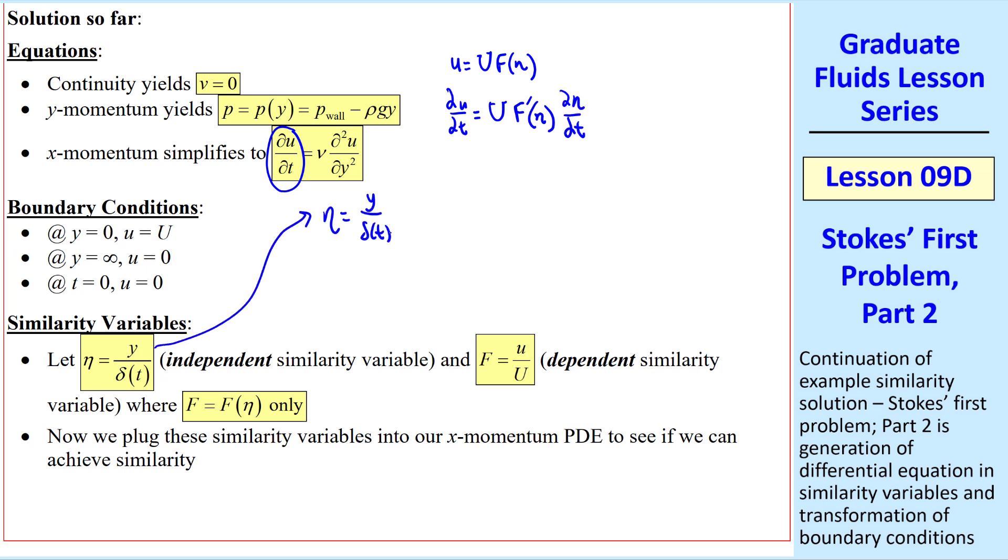But eta is y over delta of t, so ∂η/∂t is negative y over delta squared times dδ/dt, since delta is a function only of time, but eta is a function of both y and time.